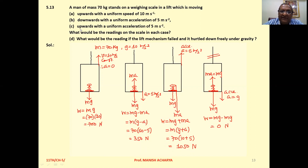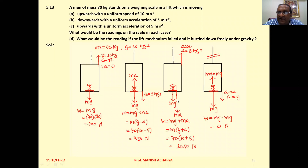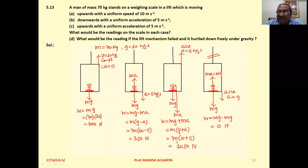Case C — lift moving upward with uniform acceleration of 5 meter per second square. Weight of the person mg is downward. Since the lift accelerates upward, the pseudo acceleration imparted on the person is in the downward direction, so pseudo force is ma downward. Both forces are in the same direction, so W = mg + ma = m(g + a) = 70 × (10 + 5) = 1050 newton.